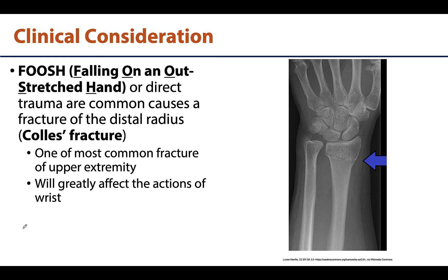A fairly common clinical consideration in this area is the Colles fracture, one of the most common fractures of the upper extremity. This is a fracture to the distal radius — you can see the fracture line right there. It is most common in older individuals, particularly those with lower bone densities. The common cause is summarized by the acronym FOOSH — falling on an outstretched hand.